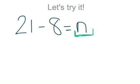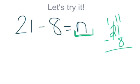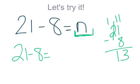Alright, so I know if I take 21 and I subtract 8 from it, I'm going to have to borrow. So, 11 minus 8 is 3. Bring down that 1, 13. So my n, it would be 21 minus 8 equals 13. Okay, my unknown is 13.